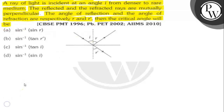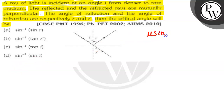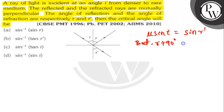Let's find out. In the figure given in the question, we may apply Snell's law for the refraction of the incident beam of light. mu sin i is equal to sin R-dense. But R plus 90 degrees plus R-dense is equal to 180 degrees. Therefore,